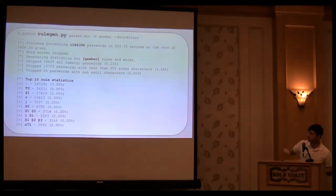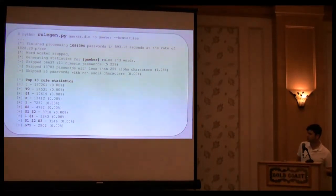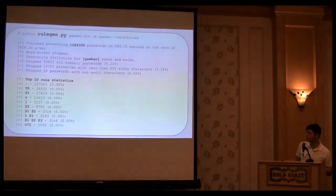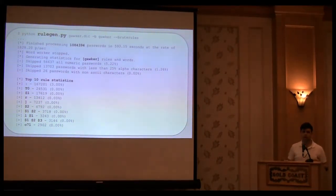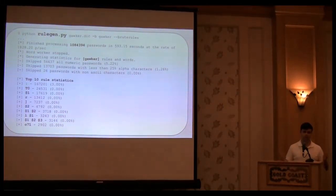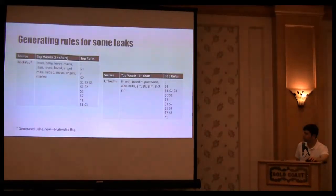You can basically see that it starts generating, and it shows you some of the top rules that are generated. Reversal, appending 1, flip the case of the first character. That colon over there means no change. Basically, RuleGen ran the password. It was found in the dictionary. Why bother getting any rules for it? So, it'll be done.